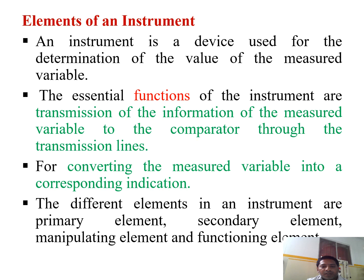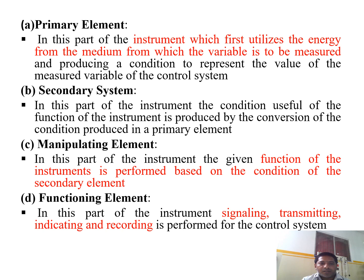For converting the measured variable into a corresponding indication, there are different elements: the primary element and the secondary element, which are manipulating elements. The primary element is the part of the instrument which first utilizes the energy from the medium from which the variable is to be measured, and produces a condition to reference the value of the measured variable. The secondary element produces the condition useful for the function of the instrument by converting the condition produced in the primary element. The manipulating element performs the function of the instrument based on the conditions of the secondary element.